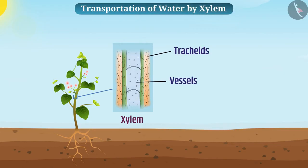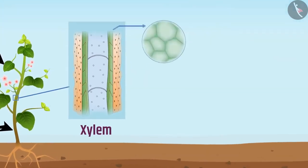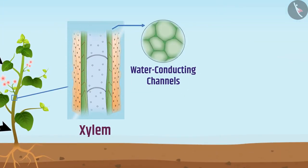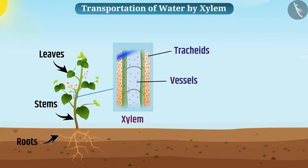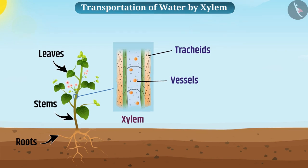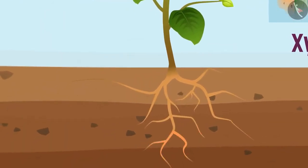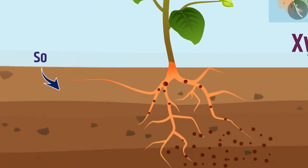Tracheids and vessels of roots, stems, and leaves form a continuous network of water-conducting channels in the xylem tissue. This network is connected to all parts of the plant. The tracheids and vessels in the xylem transport water and minerals in the form of ions.